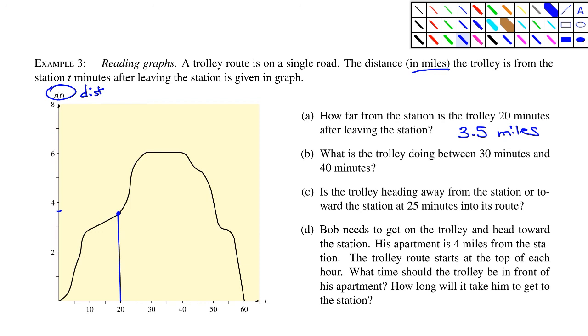Question B. What is the trolley doing between 30 minutes and 40 minutes? So if I project straight up from 30 minutes right here and 40 minutes right here, we see a horizontal segment right here. Which means that the distance that the trolley is from the station is not changing. It's always six miles. So we would say that the trolley is stationary or parked. It's probably at a location where people would normally get on the trolley at that point.